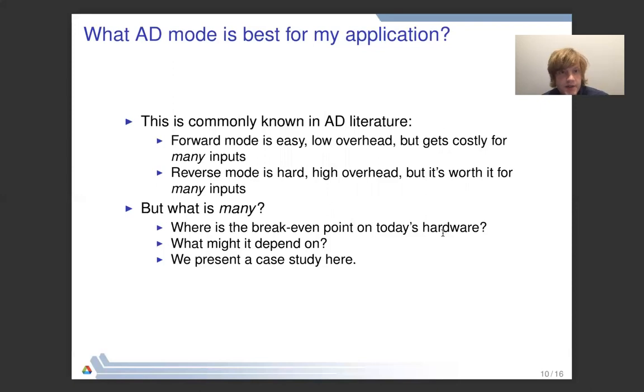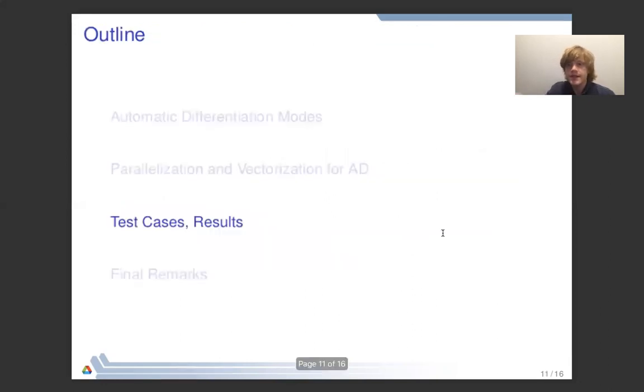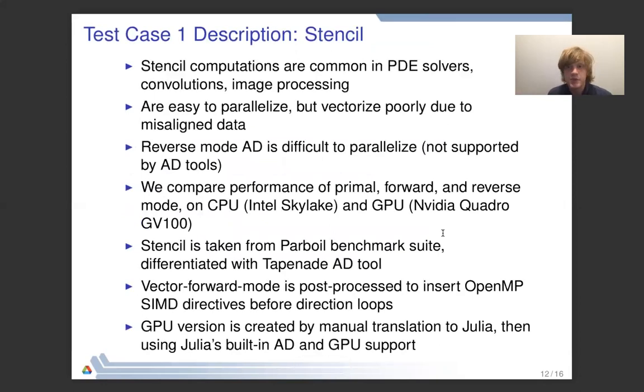The question that we wanted to answer in this work is based on an observation that is quite common in AD literature. We know that the forward mode is easy, it has a low overhead but it doesn't scale well to many inputs. The reverse mode is pretty much the opposite: it's hard, it's high overhead, but it's definitely worth it for many inputs. But how many exactly is many? That's the question that we're trying to answer. What number of inputs does it need for you to break even? We're trying to give you guidance here on whether the forward mode or the reverse mode might be better for your application. With that I'm going to jump right into the case study.